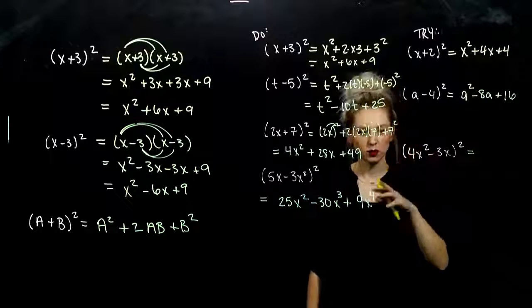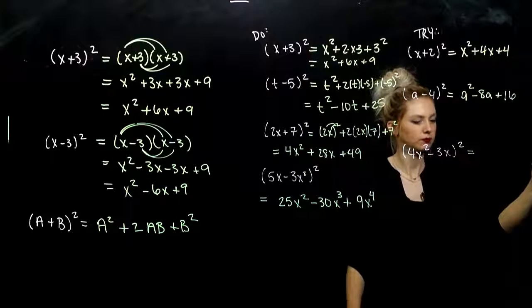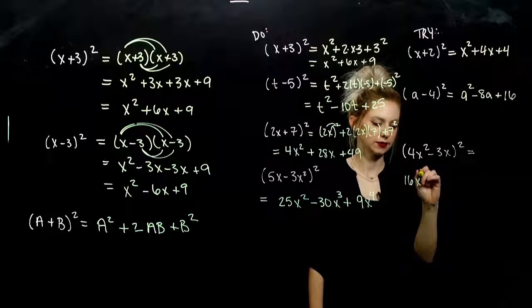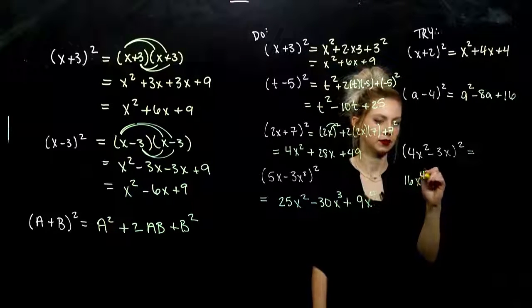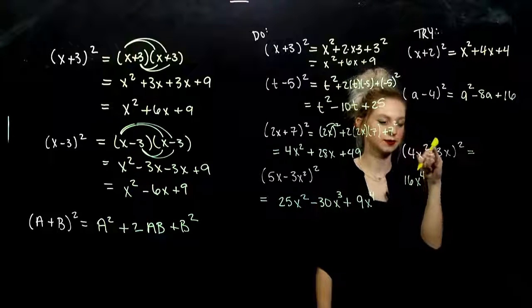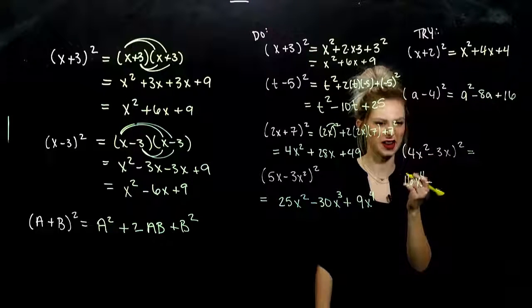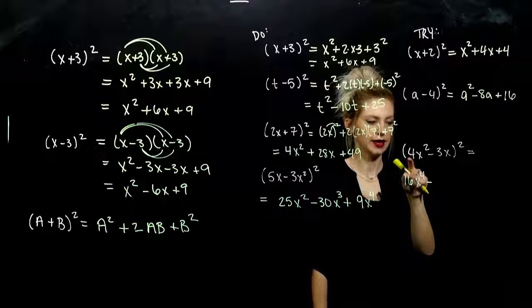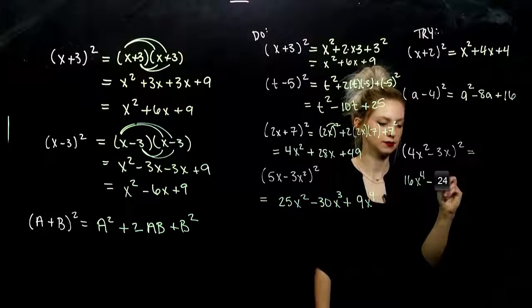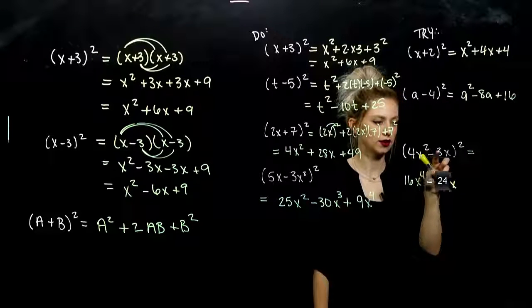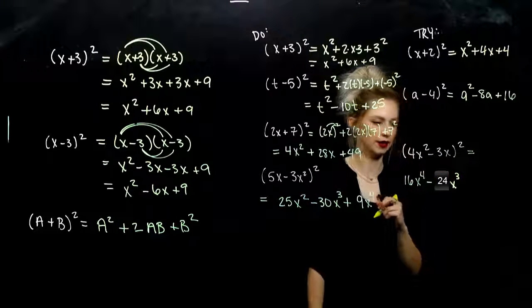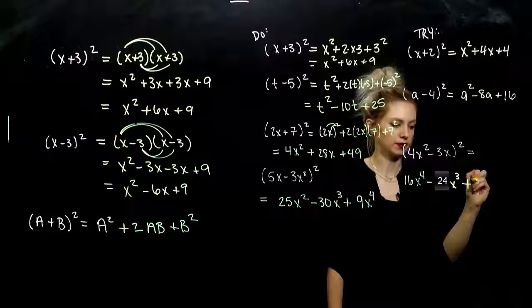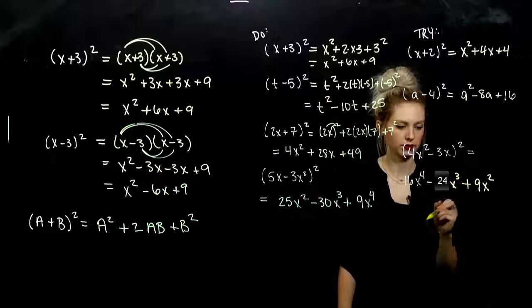More complicated one down here. Nothing we can't handle. First term squared, 16X to the fourth. I'm adding 2 times the first times the second. I know it's going to be negative, so I'm just going to write it now. 2 times 4 gives me 8, 8 times 3. And I have X squared times X, so I have three factors of that all together. And I'm adding the last term squared, 9X squared. Done.